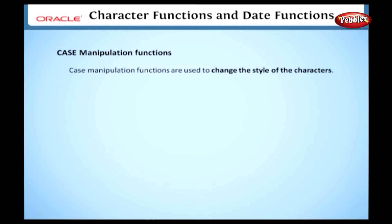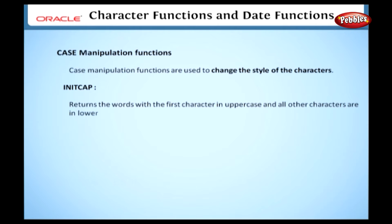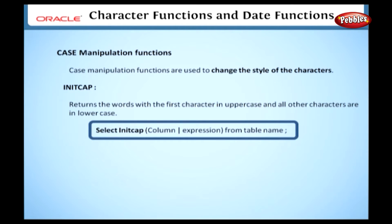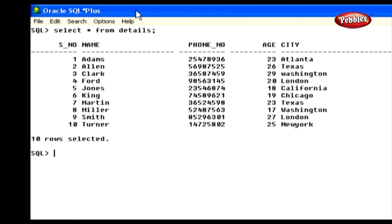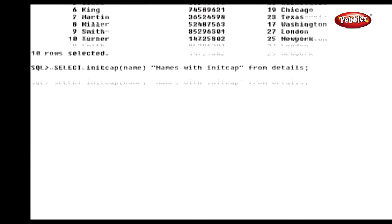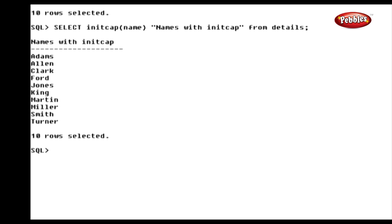First, let's see the INITCAP function. The INITCAP function returns words with the first letter in uppercase and all the other characters in lowercase. We can specify any expression or column name in this function. For example: SELECT INITCAP(name) AS "names with initcap" FROM details. This statement displays all the names with the initial character in uppercase from the table details.